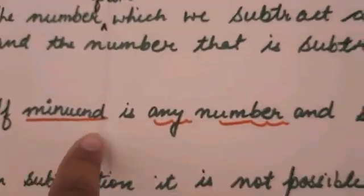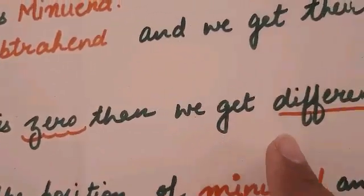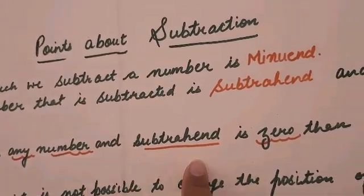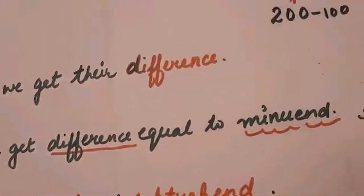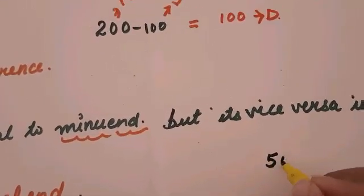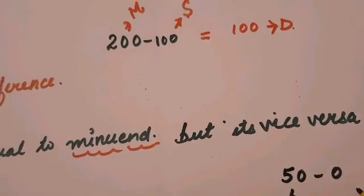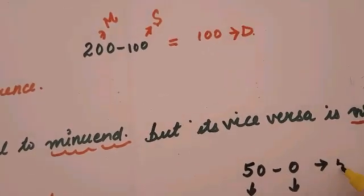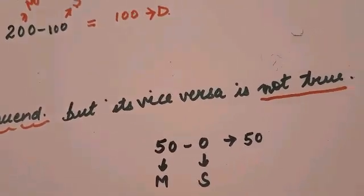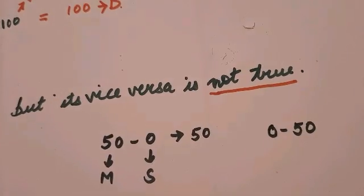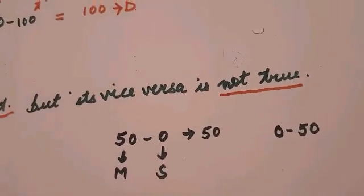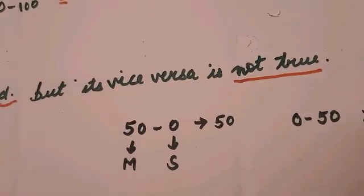Point number two: if the minuend is any number and the subtrahend is 0, then we get the difference equal to the minuend. But the vice versa is not true. For example, 50 minus 0 gives a difference of 50, which equals the minuend. But if we try to subtract 50 from 0, it is not possible at this level. In higher classes, we will talk about negative integers.